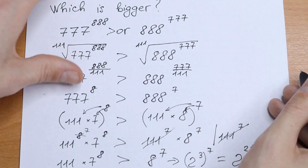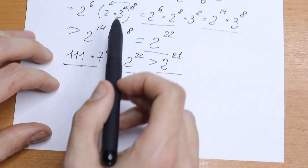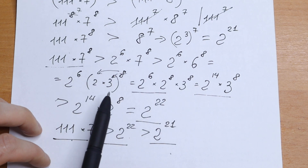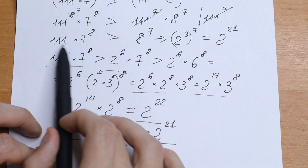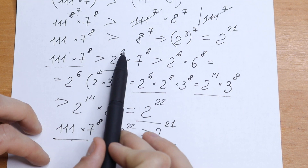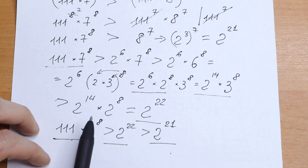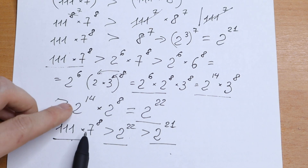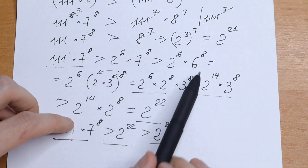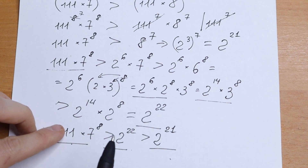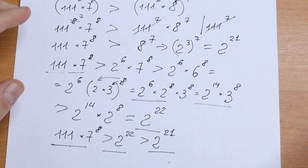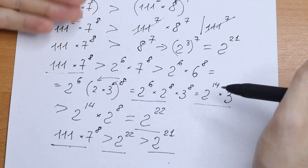This was a little bit complicated, but I want you to understand every step — especially the bounding method, since 111 and 7 are not convenient to compare directly with 2 to the 21. We couldn't express 111 or 7 as products of 2, unlike 8 which equals 2 cubed. So we used this step-by-step simplifying method. If you have questions, write them in the comments.